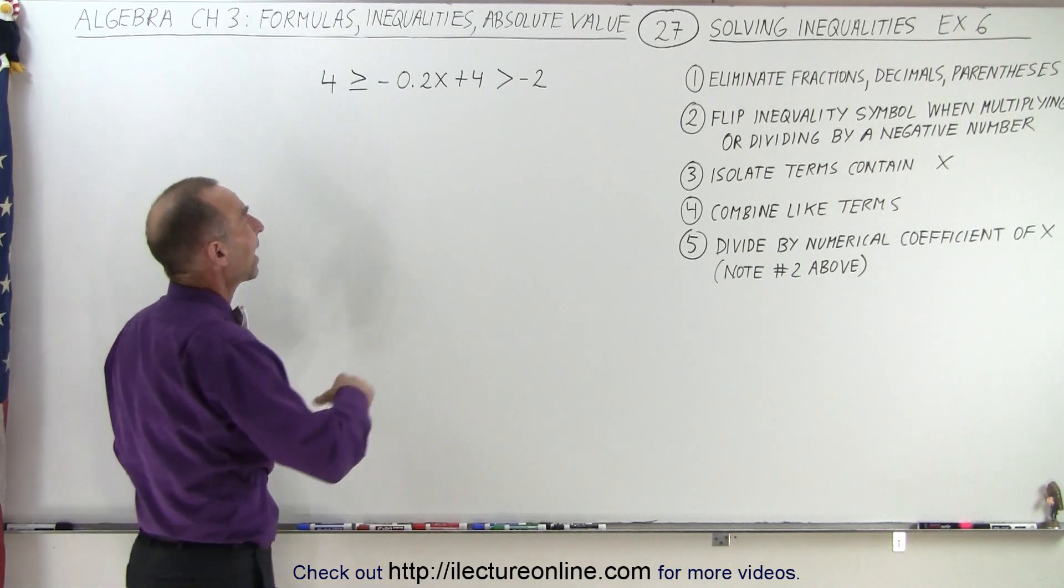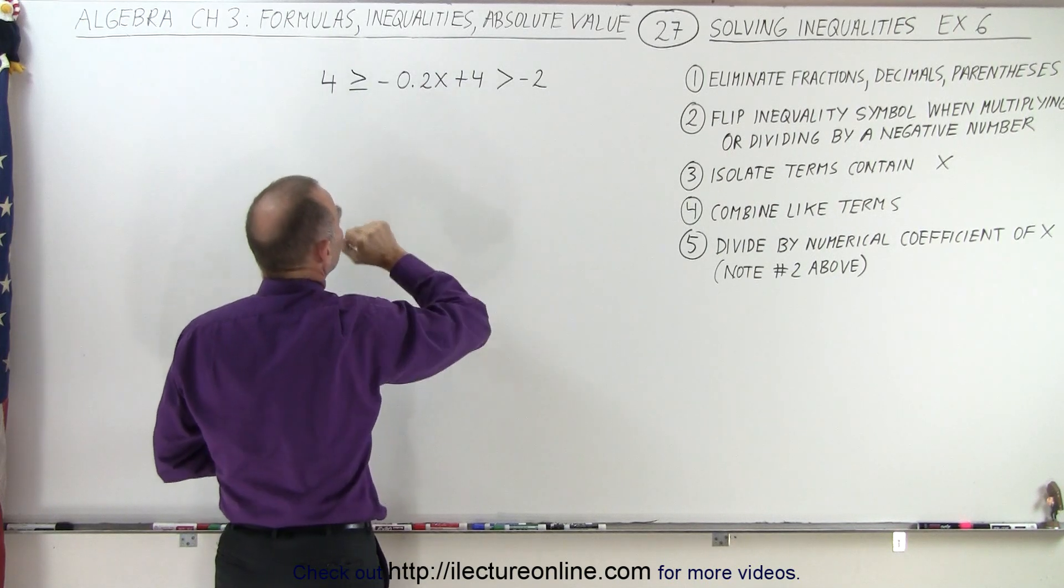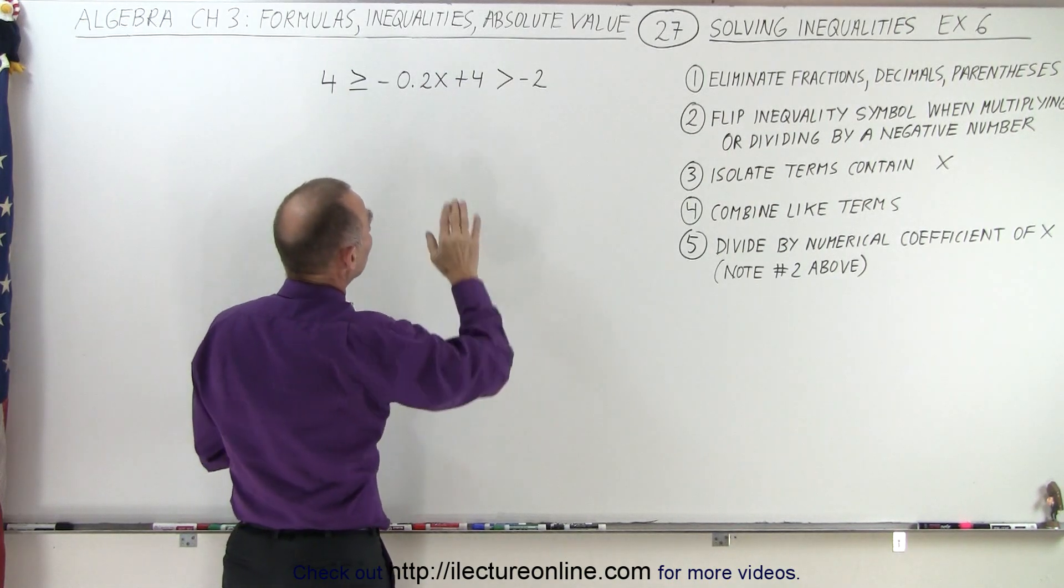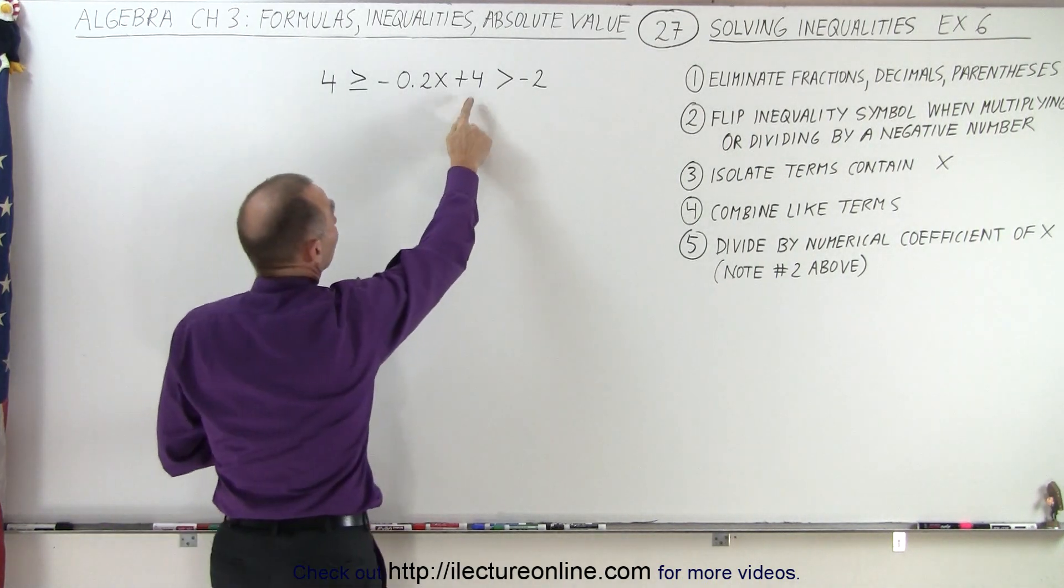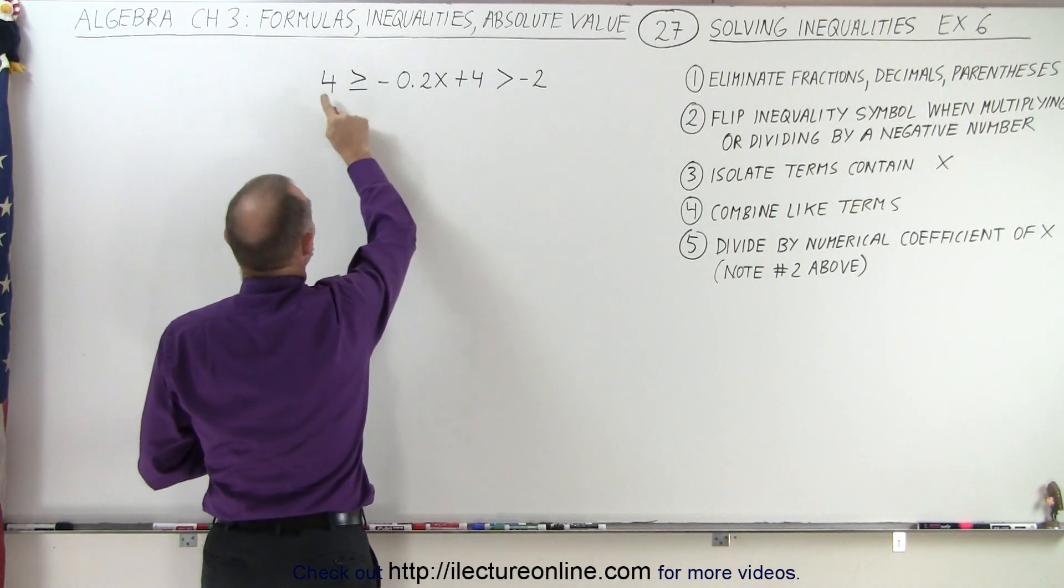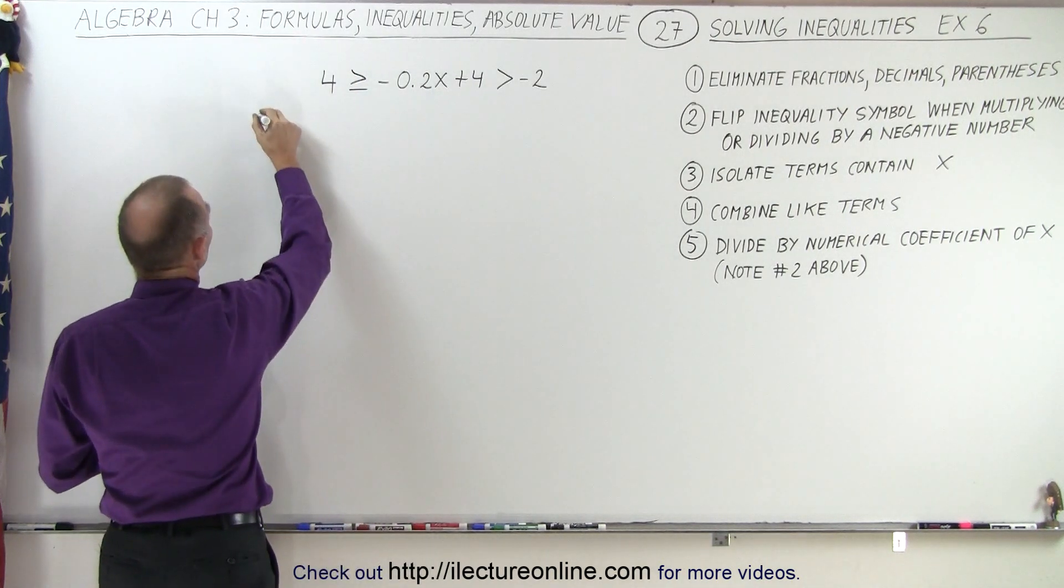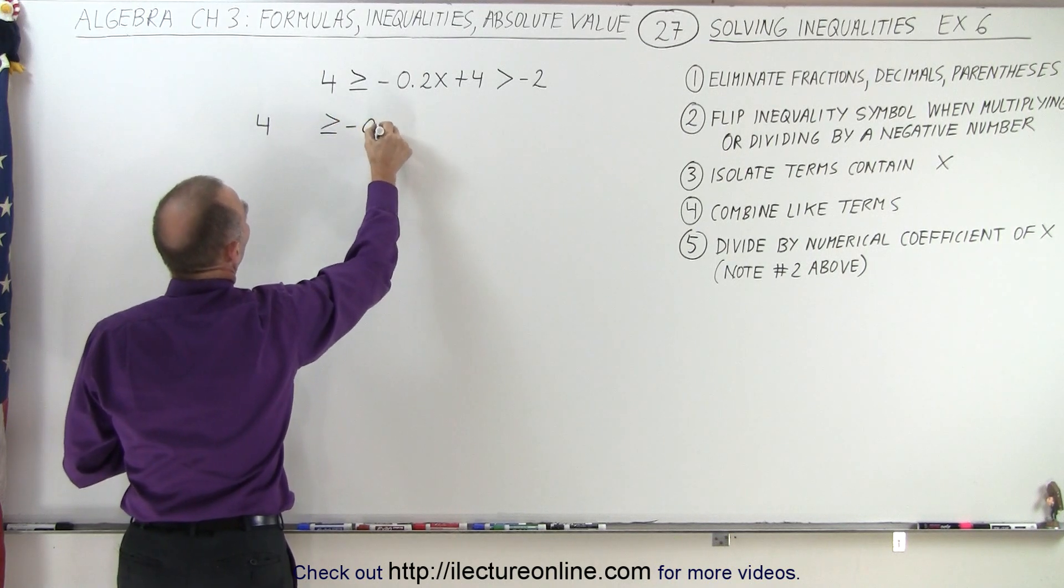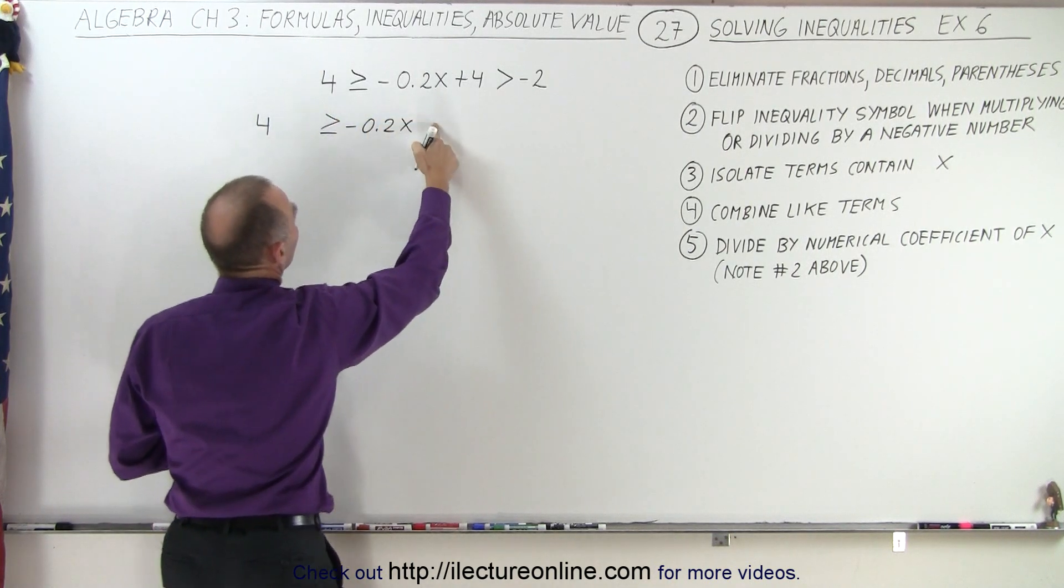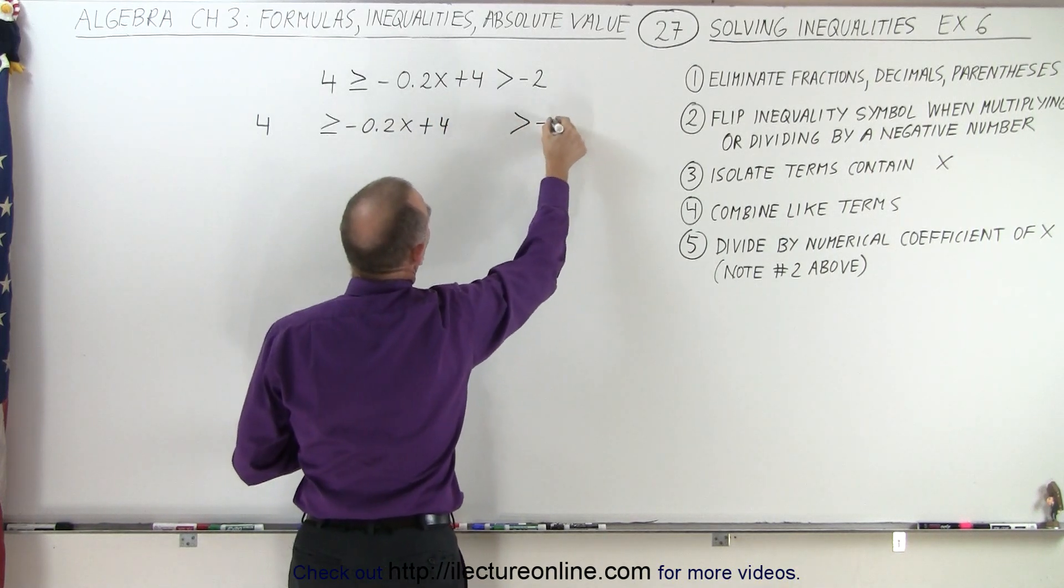Well, the first thing we want to do is get rid of the 4 and isolate the x term. So let's subtract 4 from here, but we have to do the same here and the same over here. So that becomes: 4 minus 4, greater than or equal to negative 0.2x plus 4, and then greater than negative 2 minus 4.